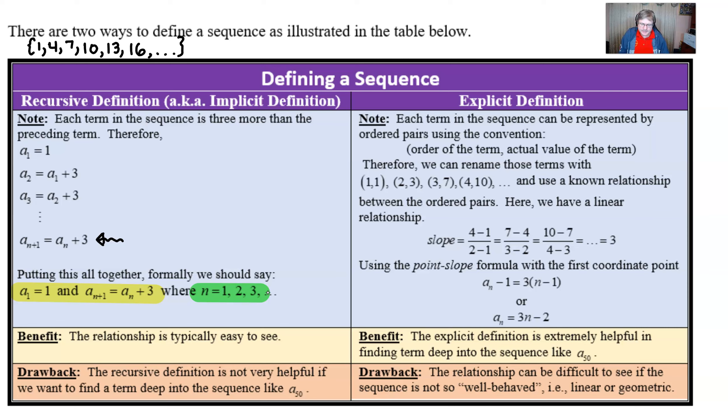Now, if we look over at the explicit definition, we look at this in a little different light, and you notice that each term in the sequence can be represented by ordered pairs. So you could use the order of the term as like the x-coordinate, and the actual value of the term could be the y-coordinate. So therefore, 1, 1, 2, and I believe we have a little typo that I'm going to fix. Let's call this a 4, you guys. So we have 1, 1, 2, 4, 3, 7, 4, 10, etc., etc.